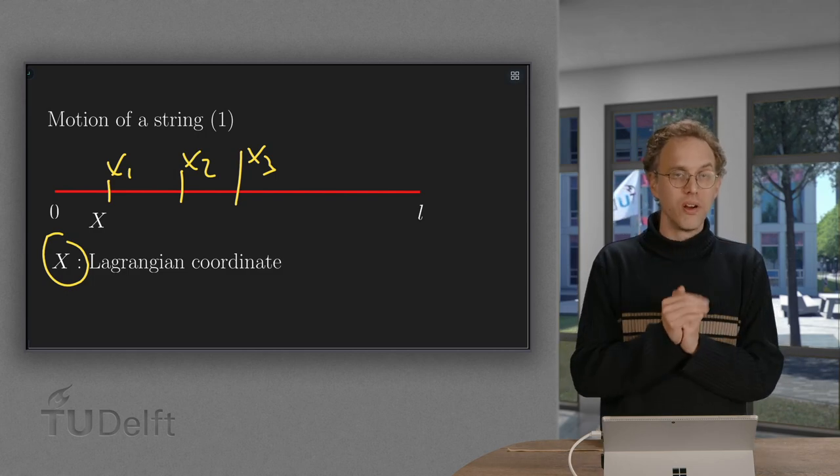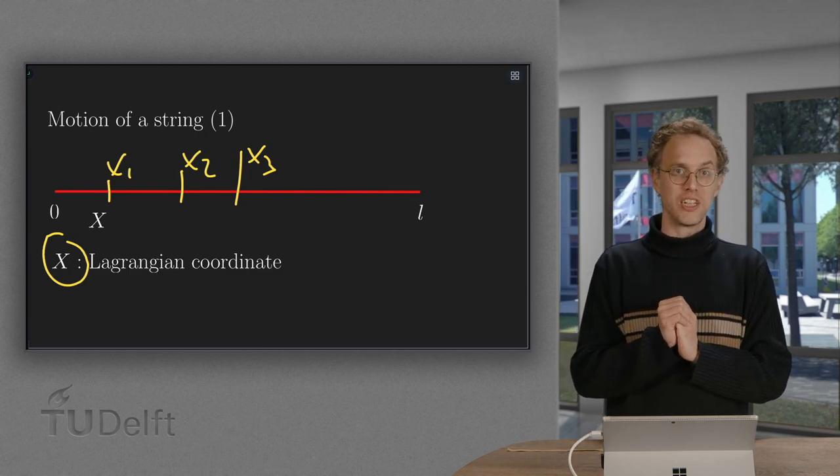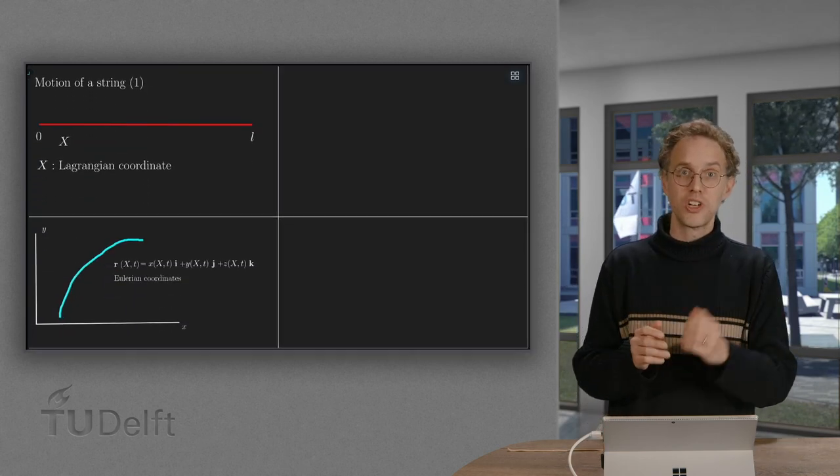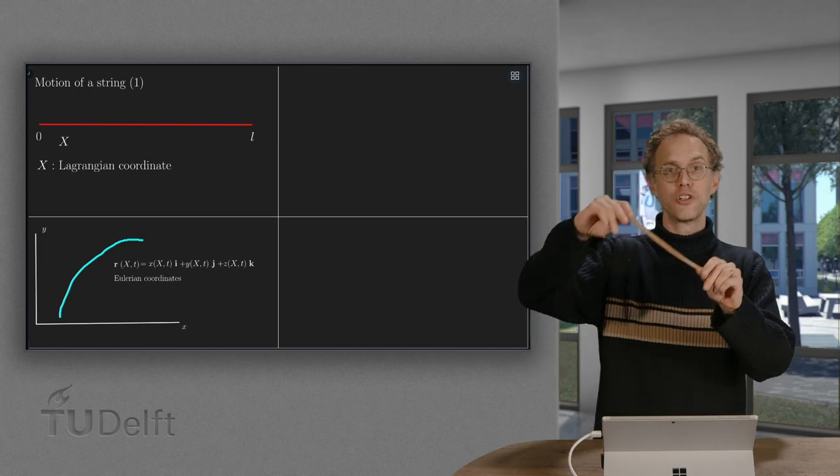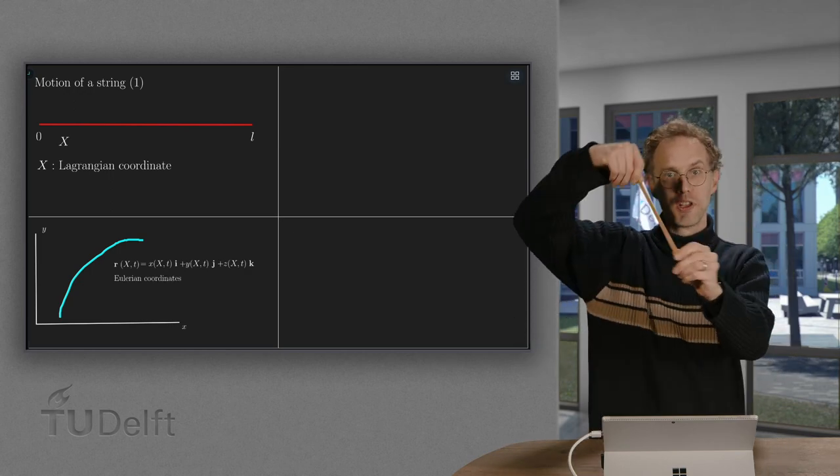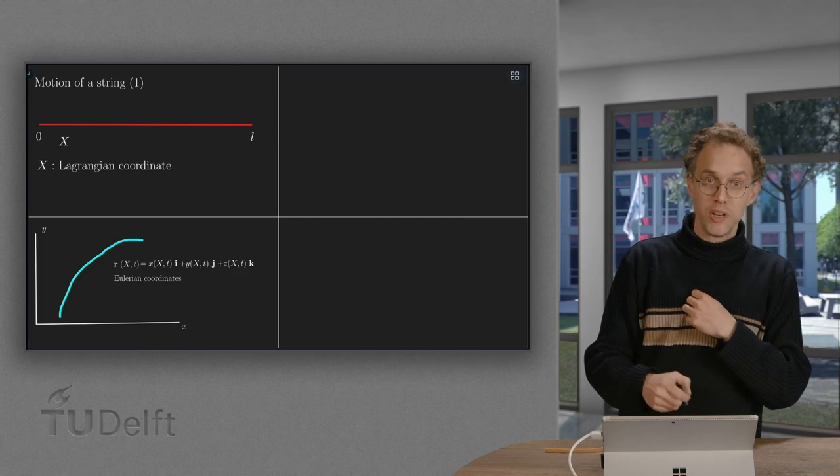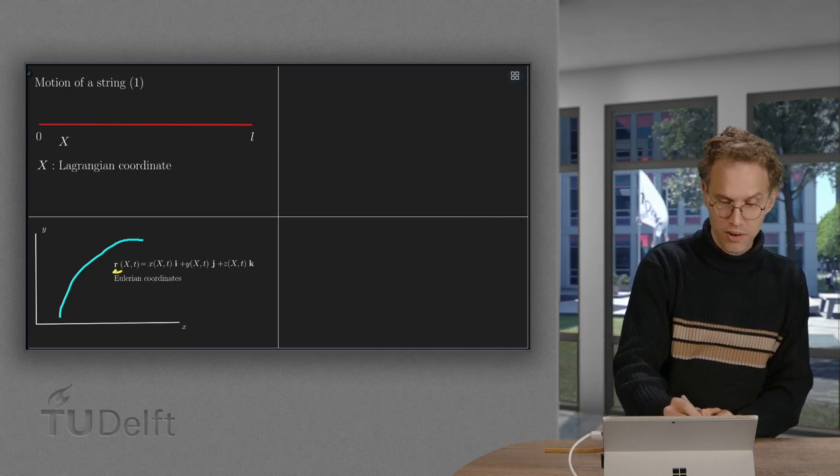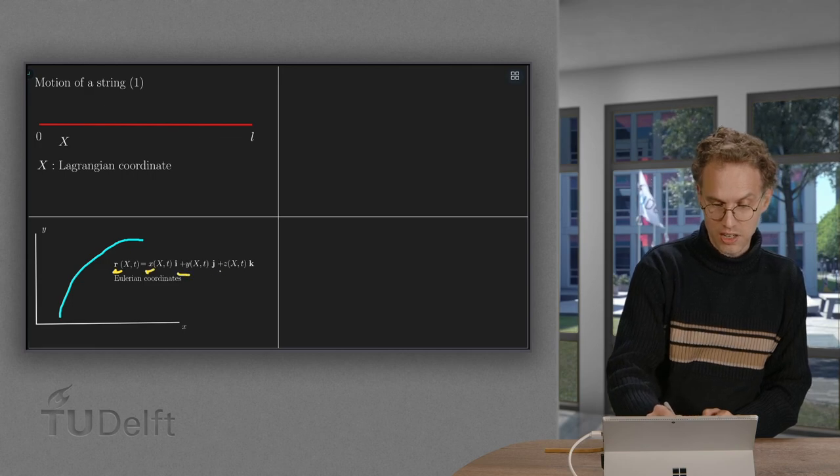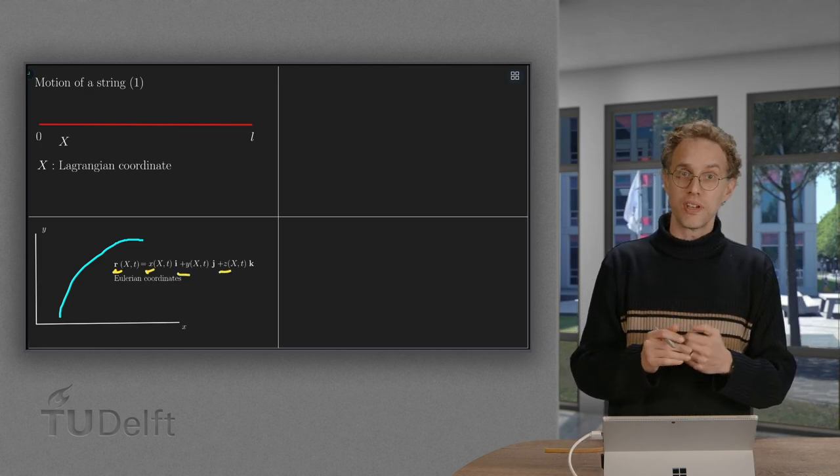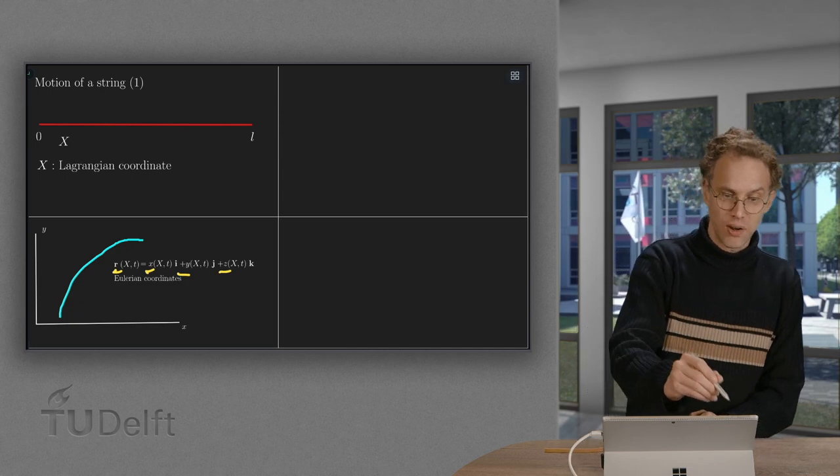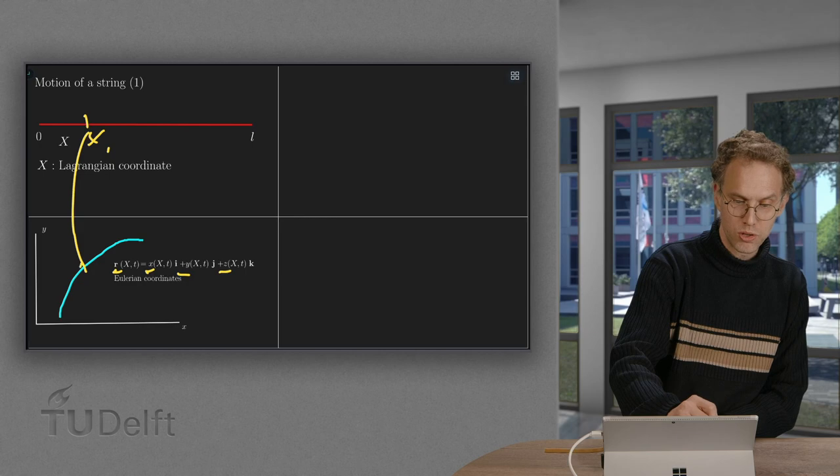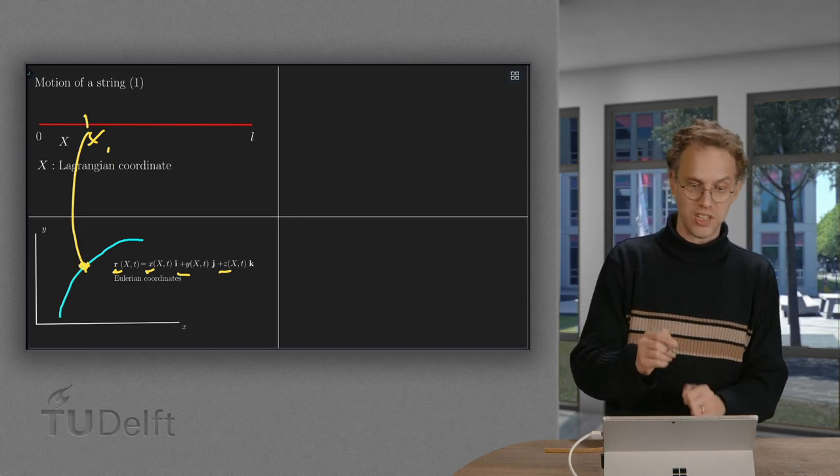Tell every part has its own capital X, but then it starts to move. So how are we going to describe the motion of a string? At a certain point, it moves to some position in space. Then we describe it by its position R, X, Y, Z in general, depending on capital X and T.